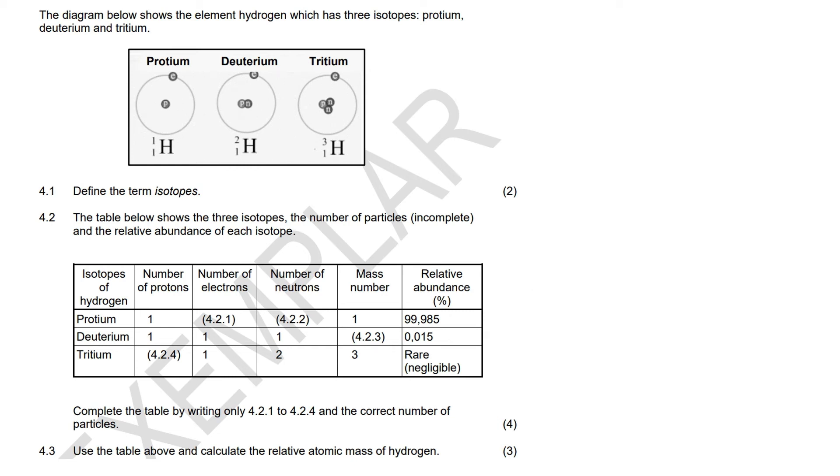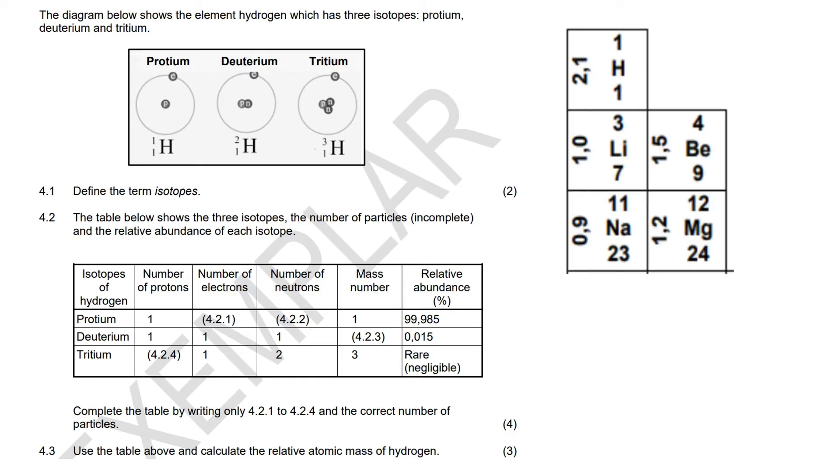The diagram below shows the element hydrogen, which has three isotopes. Do you remember what isotopes are? If not, go check it out. I do talk about isotopes in some of the videos. But pretty much what we've learned is that, let me get a periodic table quickly, is that atoms have...